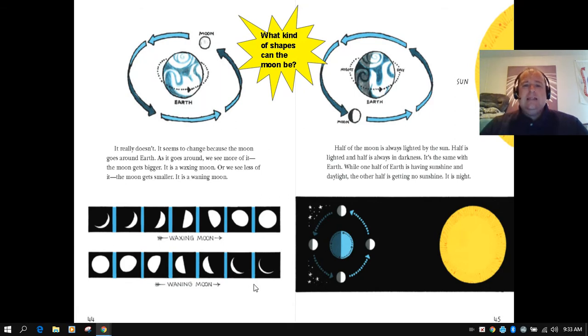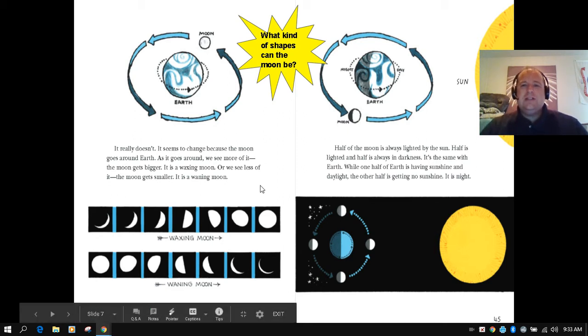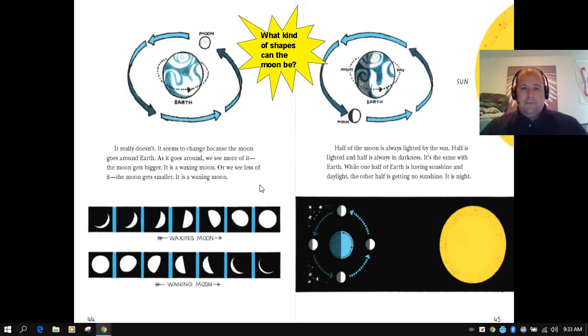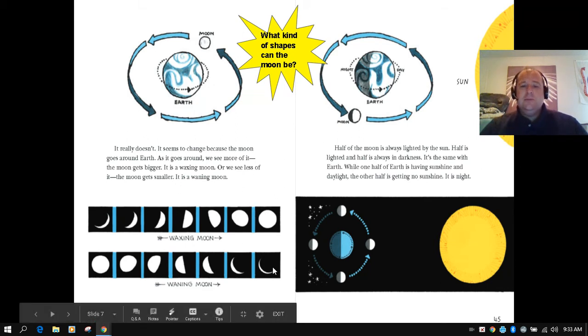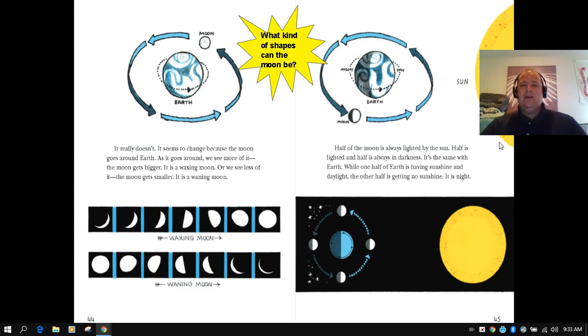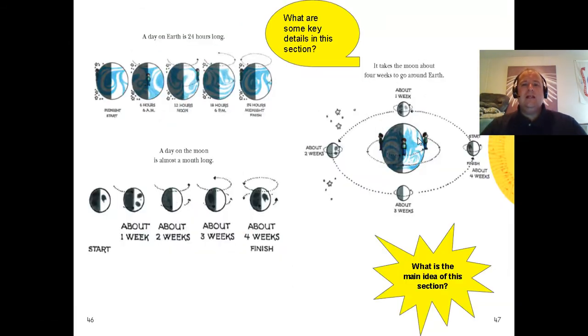Look at the waxing moon and the waning moon. Remember when a moon is waxing, it is getting bigger and looks bigger, but when it gets smaller, it looks like it's going further away. It's waning away. So what kind of shapes did you learn that the moon can be? It can be a full moon, a quarter moon, or a crescent moon, kind of like a sliver of moon. Nice job, third graders.